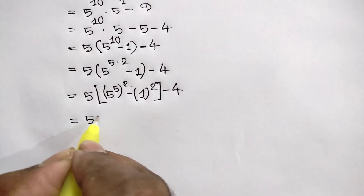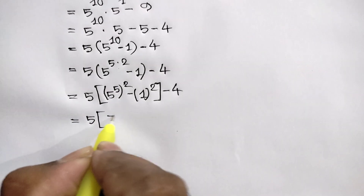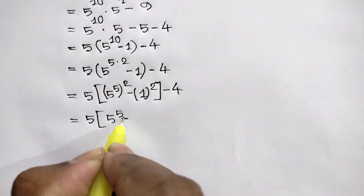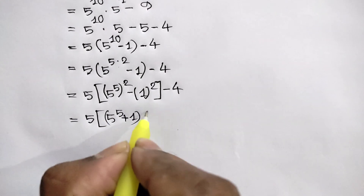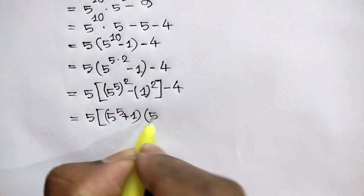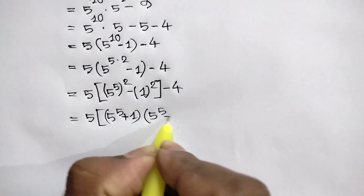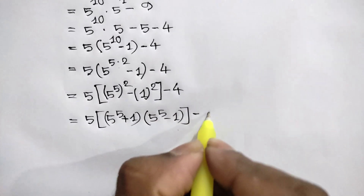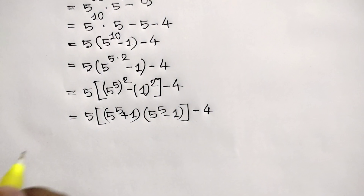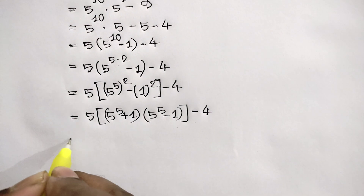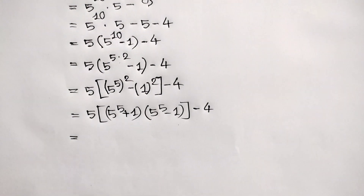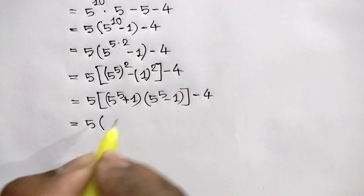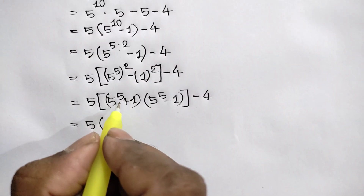So we can write 5 times the quantity 5 to the power 5 plus 1, times 5 to the power 5 minus 1, and this negative 4 is equal to 5 times — and 5 to the power 5 is 3125.